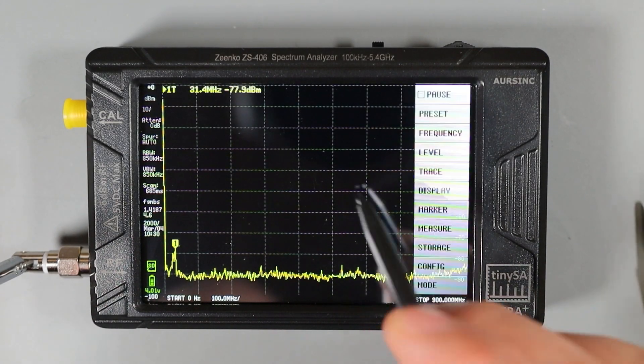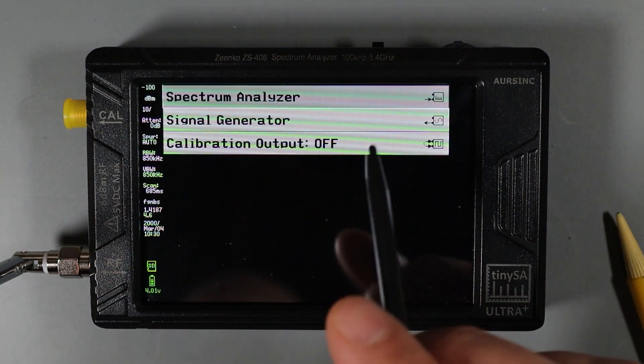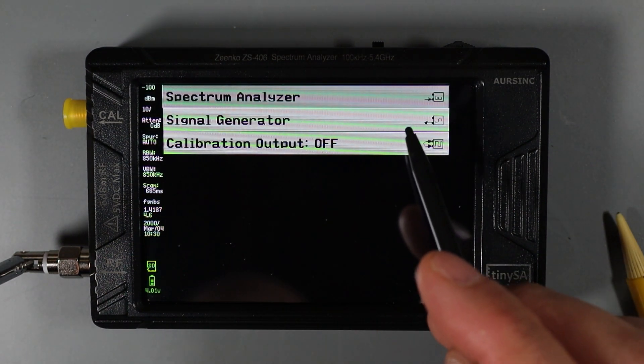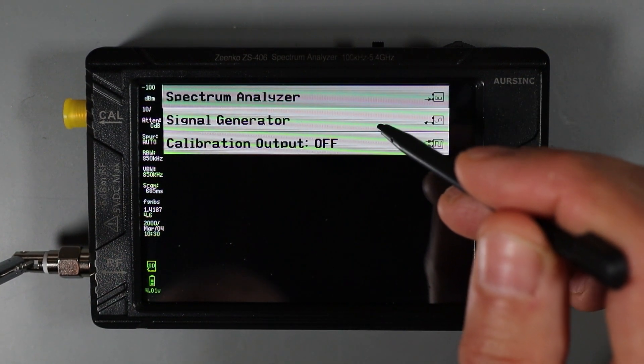To get into the signal generator, I once again go to the top level menu, and I choose mode. Here you can see we have selections for signal generator and calibration output, so we're going to choose signal generator.